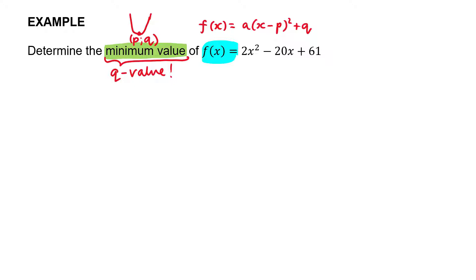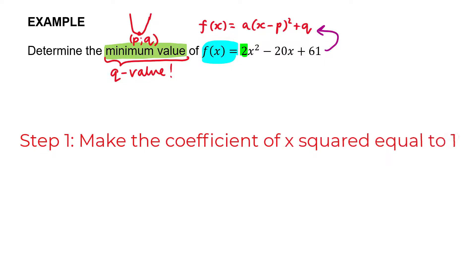We've got to complete the square and rewrite this in the form above. We start by making the coefficient of x² equal to one — we can see it's currently two. Many people go straight to dividing every term by whatever's in front of x², but we can't do that because it's not an equation; it's an expression. We can't just get rid of denominators. So instead, the method we use to make that coefficient equal to one is to take out a highest common factor.